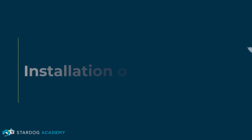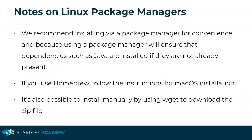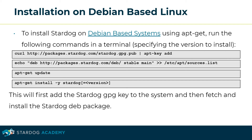This section is about installation on Linux. We recommend installing via a package manager for convenience and because using a package manager will ensure that dependencies such as Java are installed if they're not already present. If you use Homebrew, follow the instructions for macOS installation. It's also possible to install manually by using wget to download the zip file. To install Stardog on Debian-based systems using apt-get, run the following commands. These will first add the Stardog GPG key to the system and then fetch and install the Stardog dev package.